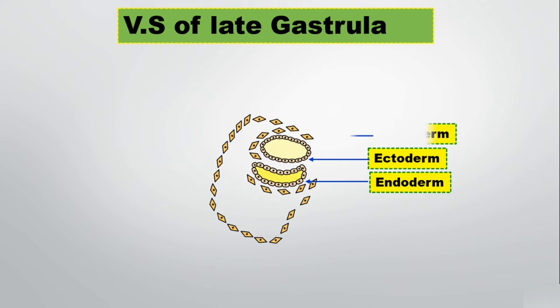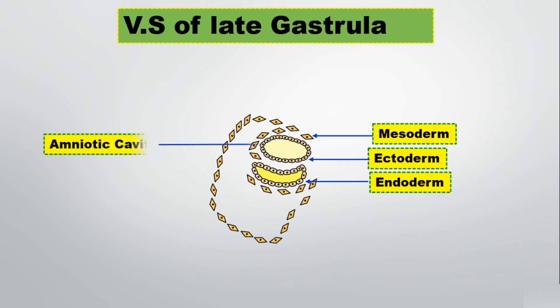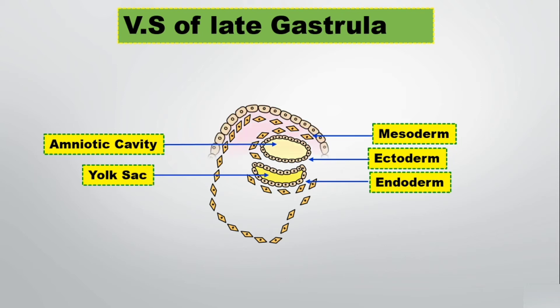So remember the order: it is endo, ecto, meso. The cavity that is present in the ectoderm is called the amniotic cavity, which is filled by amniotic fluid. And in the endoderm, there is a yolk sac, which is vestigial.